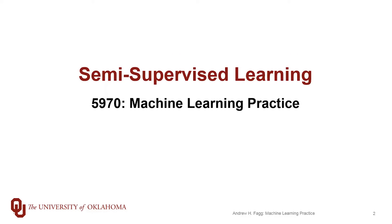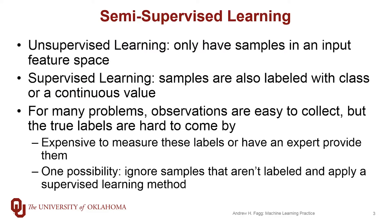So far this semester, we've been talking about unsupervised and supervised learning methods, and these really represent two ends of a spectrum. With unsupervised learning, we only have samples from some sort of input feature space. With supervised learning, these samples are also labeled in some way — we might have a class label or some sort of continuous value coupled with each of those samples.